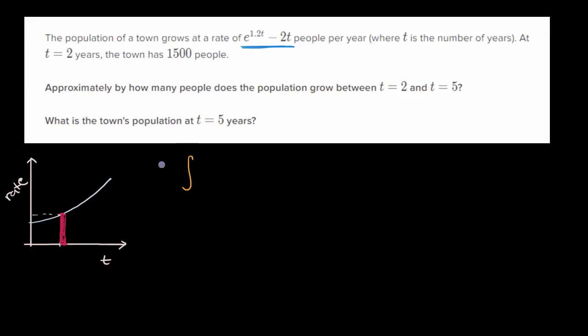And we have seen multiple times in calculus how to express that. So the definite integral from t is equal to two to t is equal to five of this expression, of e to the 1.2t minus 2t dt. So if we just evaluate that, that will be the answer to this first question. Let's actually work it out.